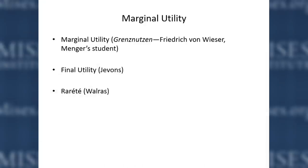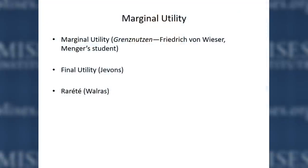Menger did not name the concept of marginal utility, and there's a reason for that — it wasn't the central focus. Human beings, their wants, and how they strived to satisfy their wants — that was the central focus. Whereas for Jevons and Walras, this law in a more or less mechanical, mathematical version was the central focus. Jevons called the term 'final utility,' and Walras called it 'rarité,' which roughly translated as scarcity.